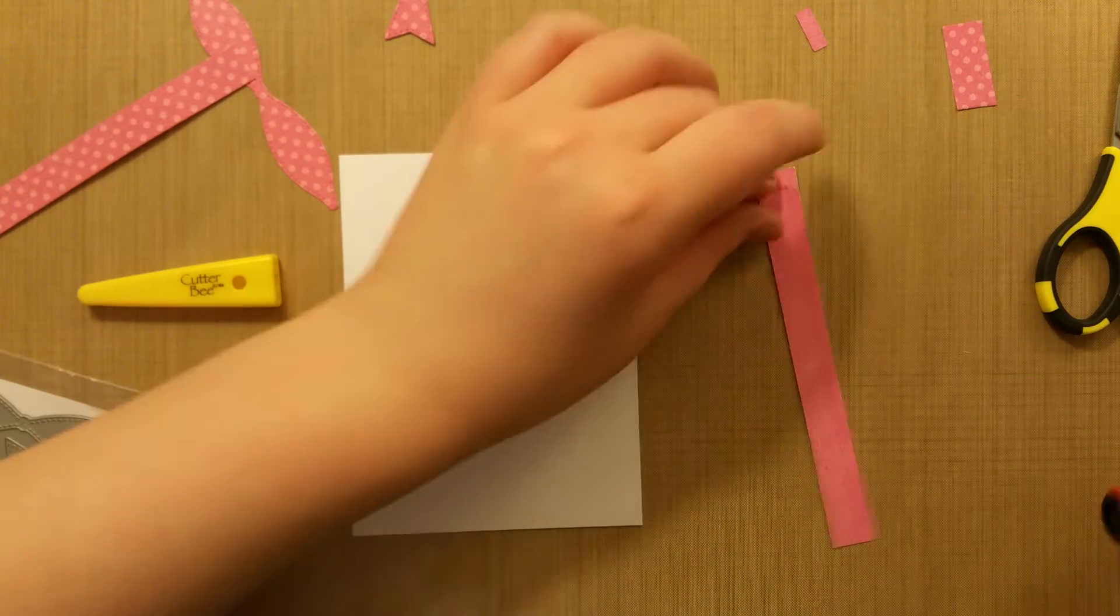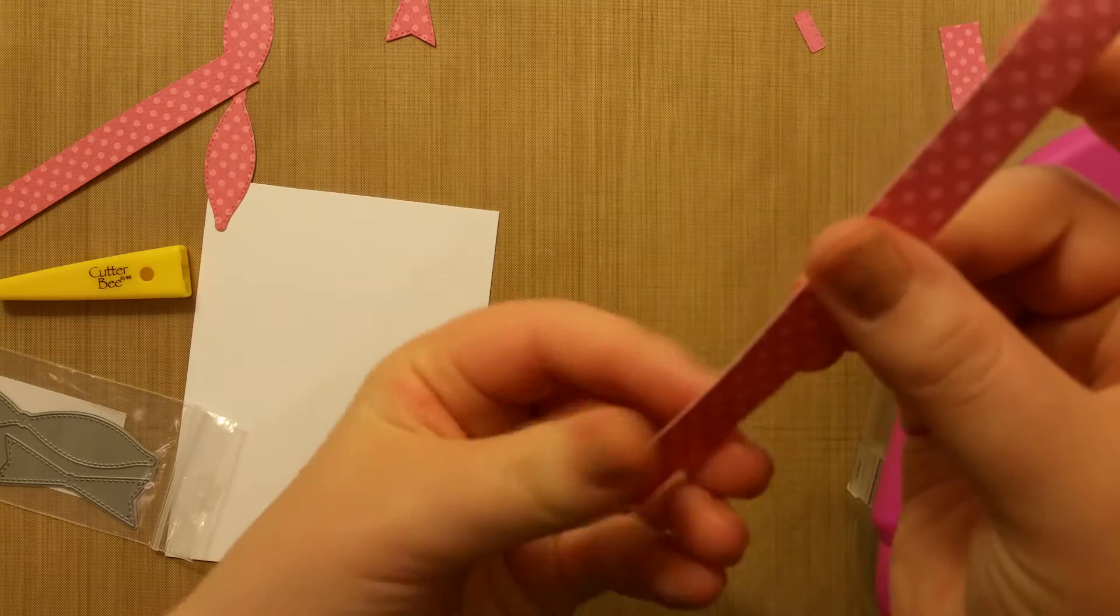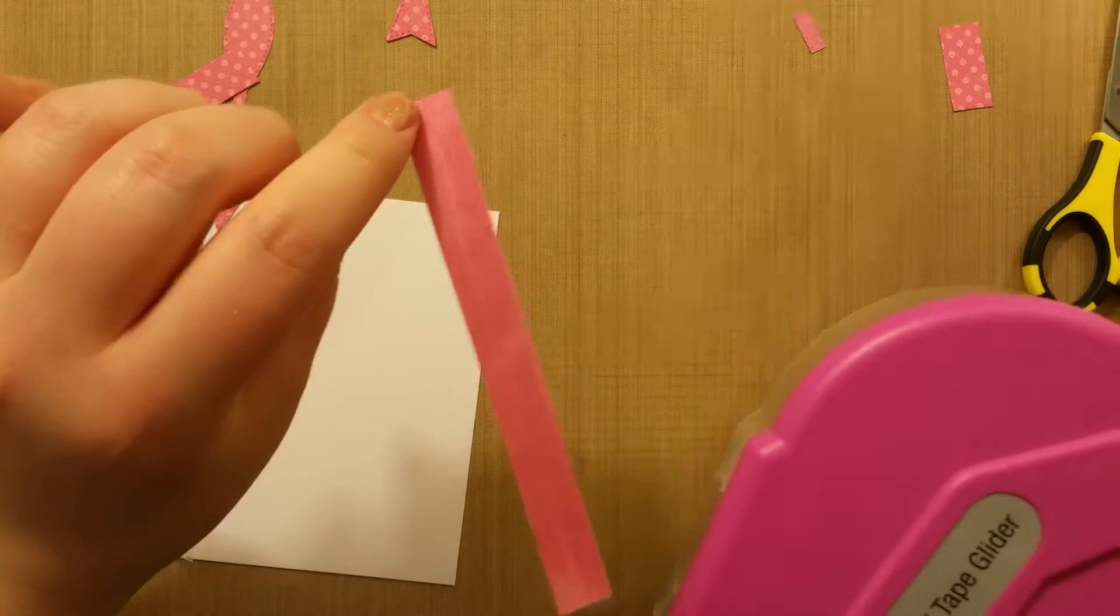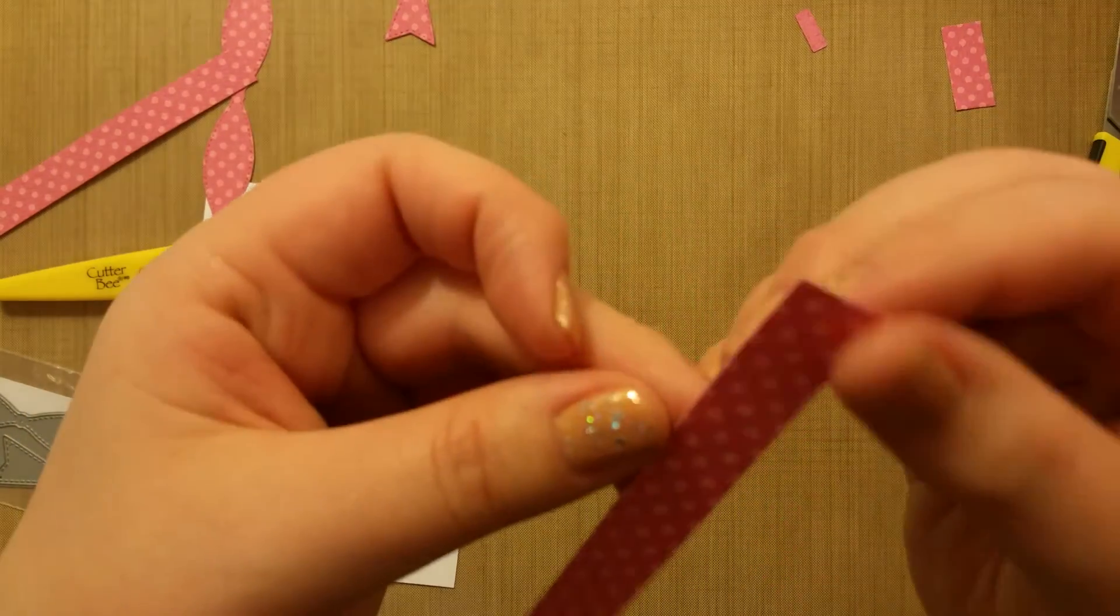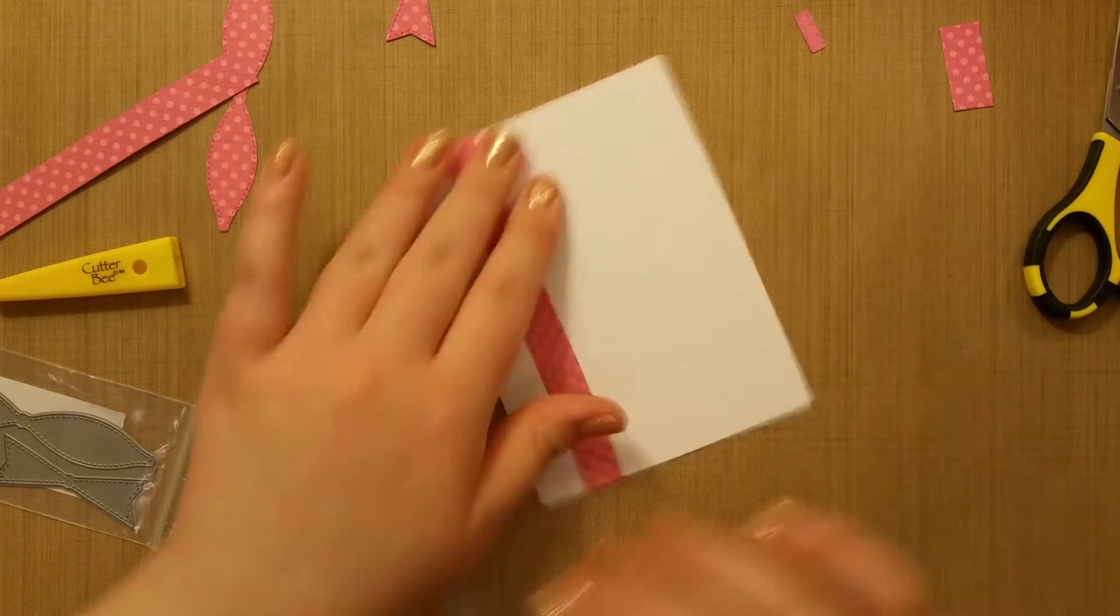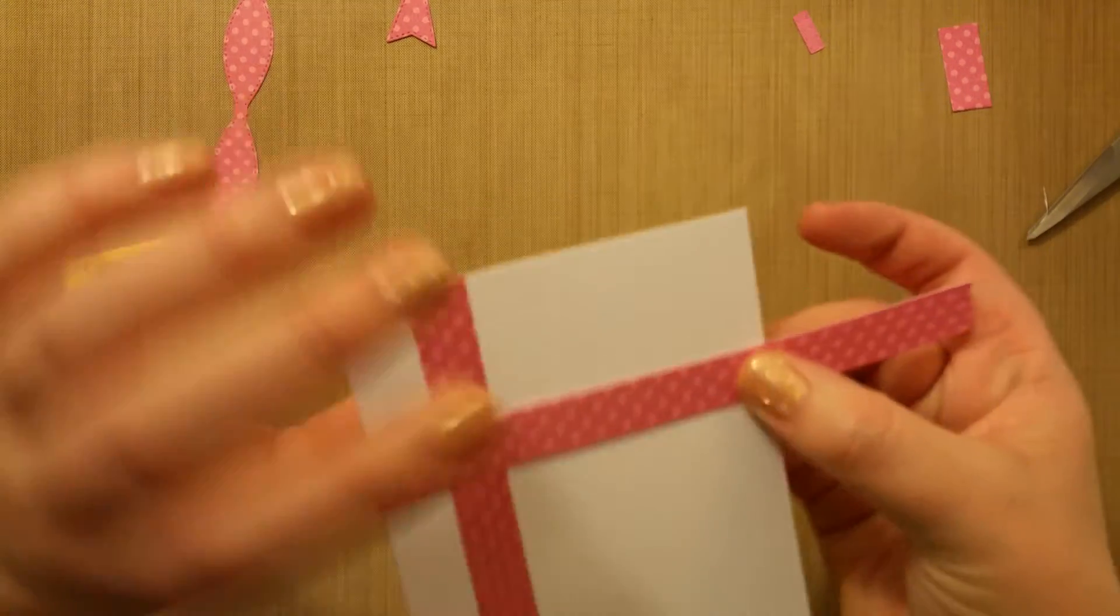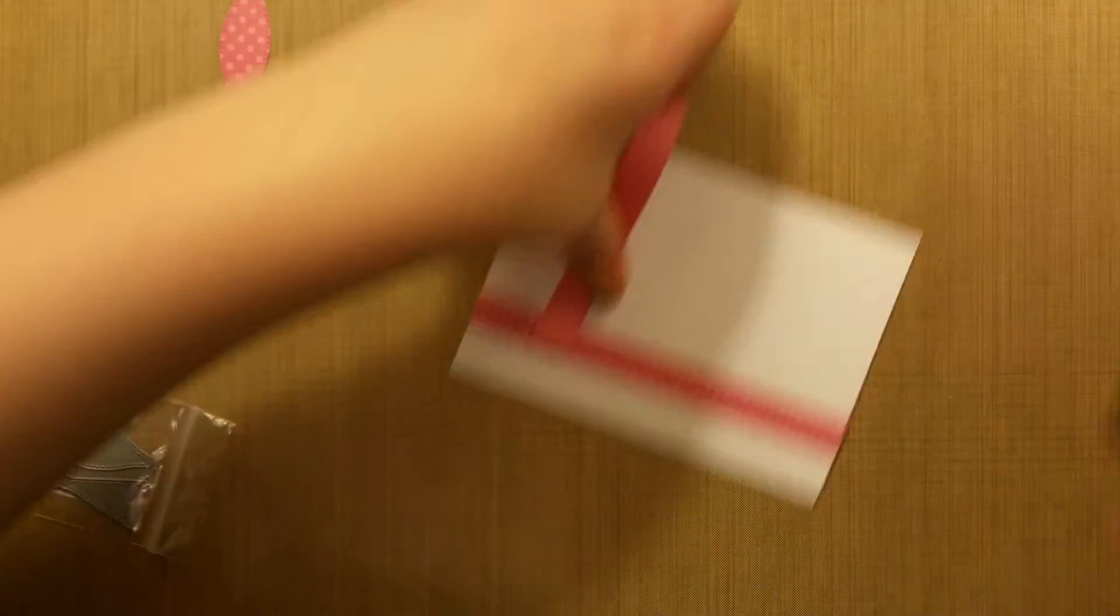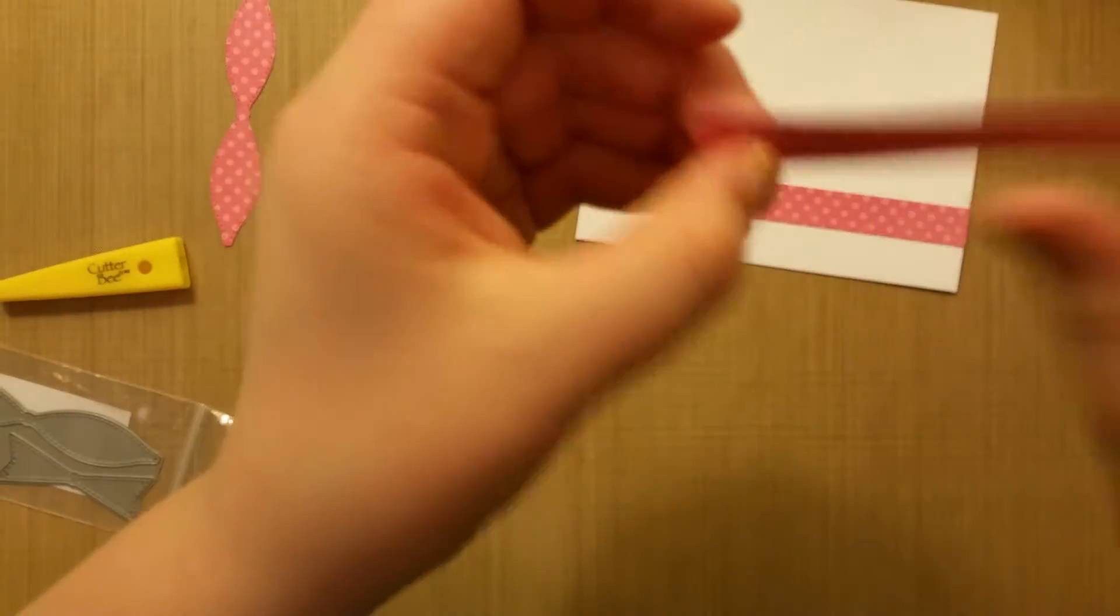So I'll run some adhesive along there, I just refilled my gun, so it's a little sticky to get started. I didn't have any scrap paper to try it on. So we'll run it down the other side, so we've got it covered. Then we'll run that down the side of that card piece, and then we'll do the same thing for the one crossing to the right.